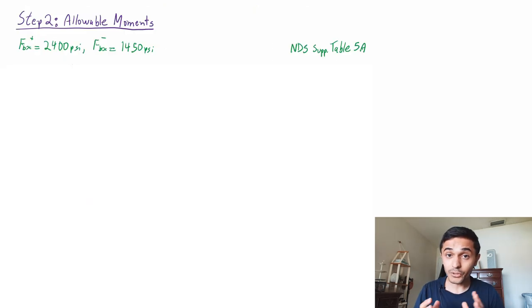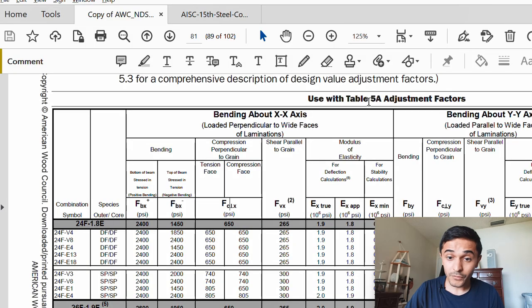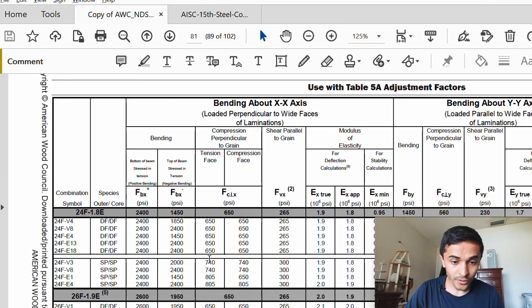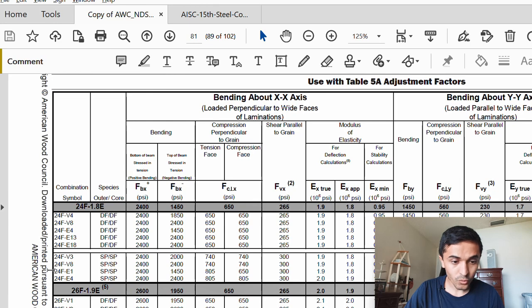The second step is to go to NDS supplement table 5A and we're going to get bending design values and this is what I wanted to highlight for a glulam beam. We came to table 5A of the NDS supplement and we can find our beam mark right here 24F-E1 southern pine, southern pine and we have two bending design values.